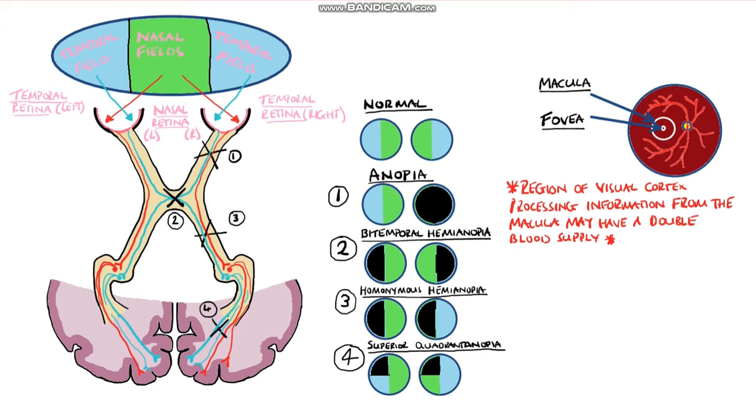So, if one of these blood supplies is interrupted, the parts of the visual cortex that process the optic radiations may lose their ability to function, but the part of the visual cortex used specifically to process information coming from the macula may actually be alright due to its second blood supply.